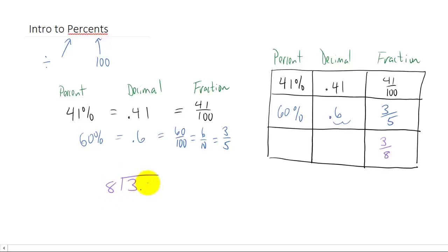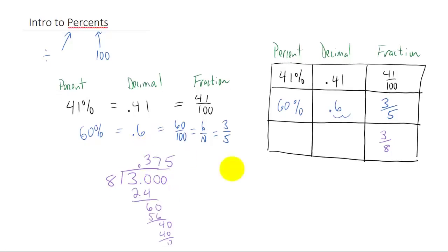In this case that involves putting a decimal place and adding some zeros, and then you do the long division as you normally would. You can check my work on that, but I'm getting that three eighths when you do the long division is point three seven five. Then if you want to take that decimal and convert it into a percent, that again just involves moving the decimal place two places to the right.